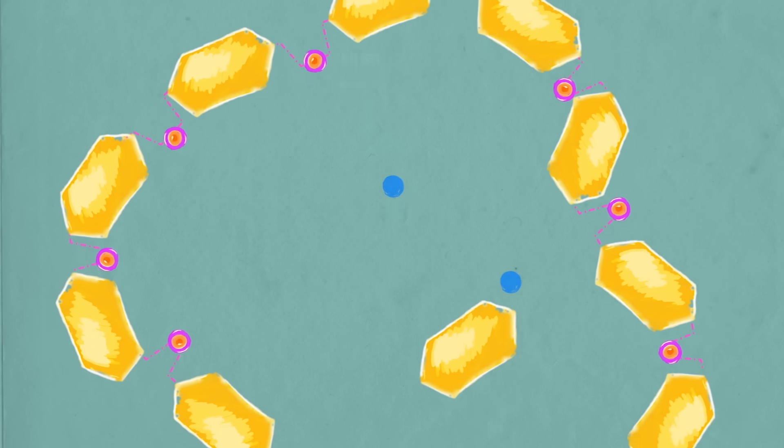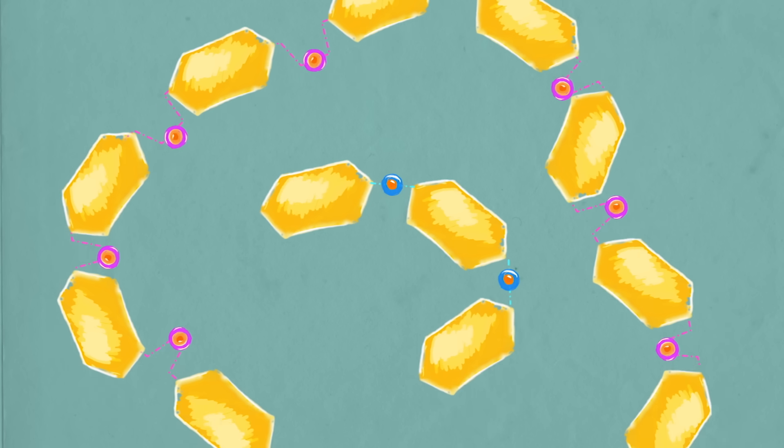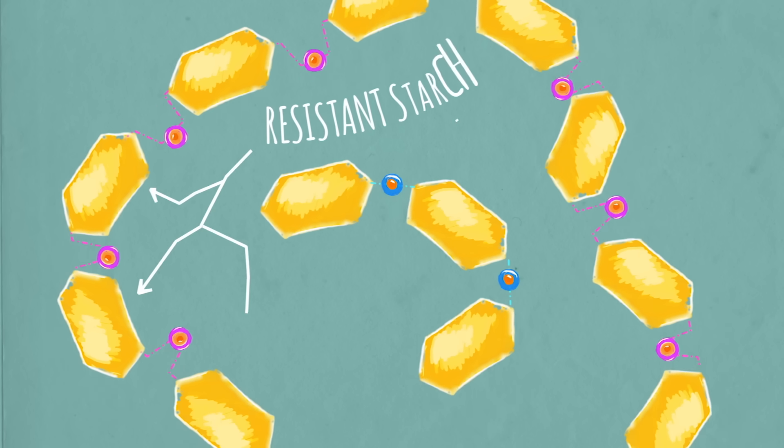Fiber can also trap some starches, preventing them from being cleaved, resulting in something called resistant starch.